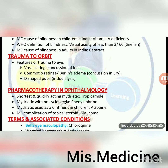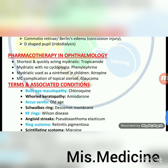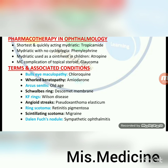Trauma to orbit: features include vossius ring, concussion of eye lens, commoretinase or Berlin's edema (concussion injury), and D-shaped pupil / iridodialysis. Pharmacotherapy in ophthalmology: shortest and quickest acting mydriatic — tropicamide. Mydriatic with no cycloplegia — phenylephrine. Mydriatic used as ointment in children — atropine. Most common complication of topical steroid — glaucoma.